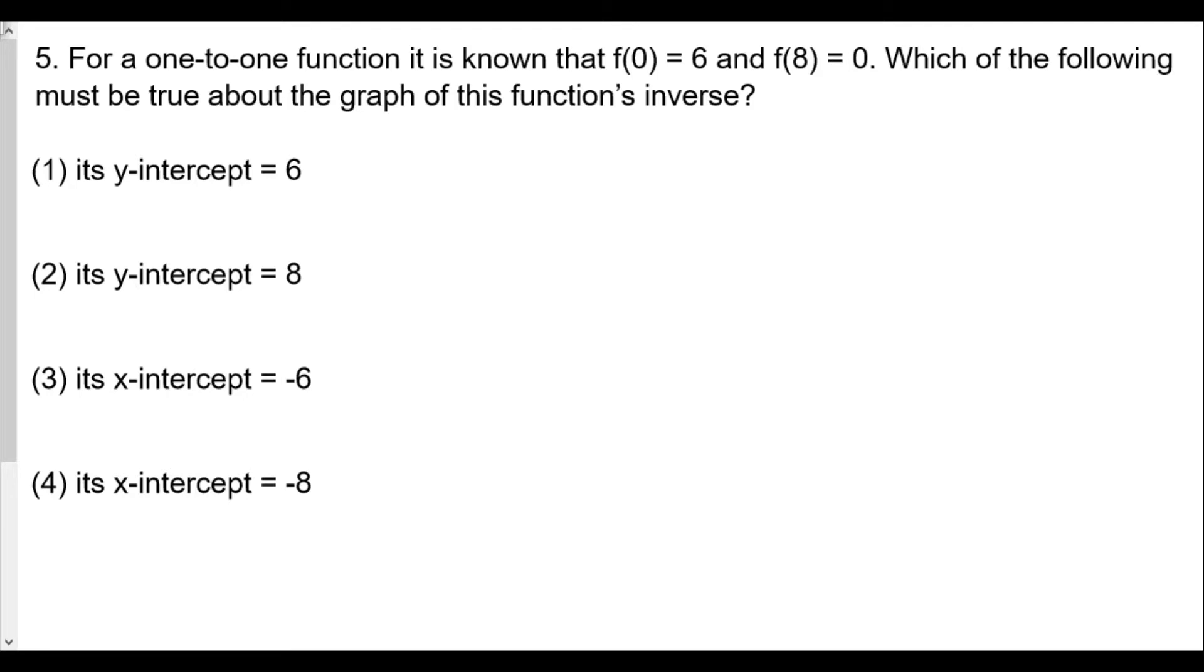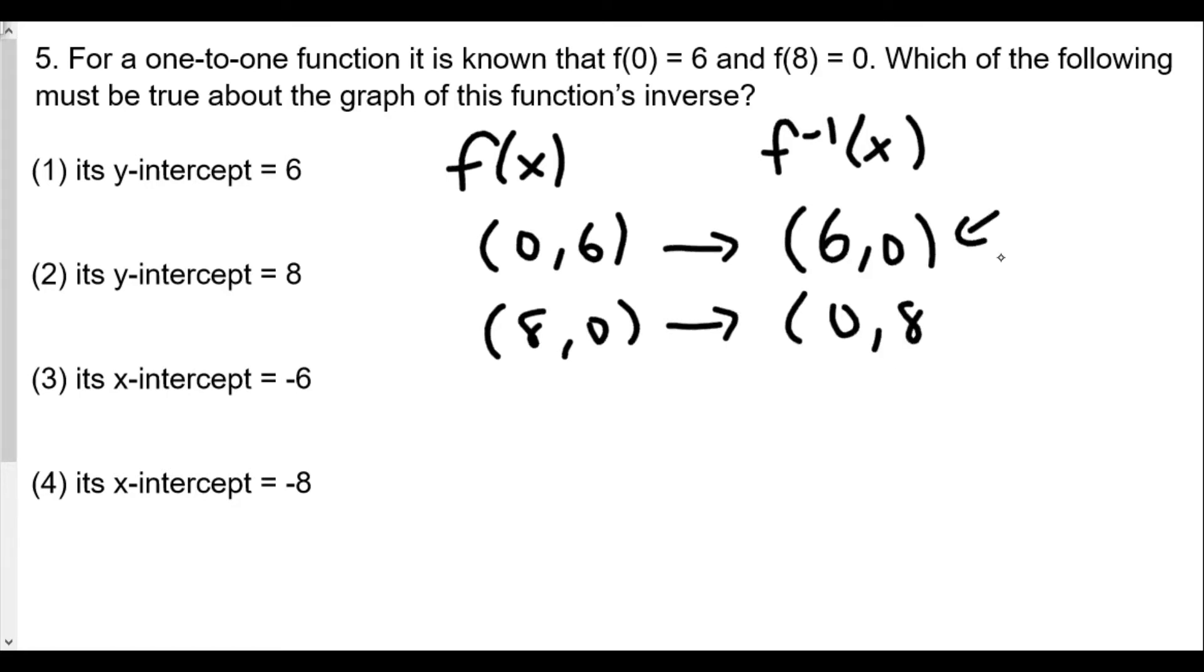Question 5: For a one-to-one function it is known that f(0) = 6 and f(8) = 0, which of the following must be true about the graph of this function's inverse? Well, we know that for f(x) we have two coordinates: (0,6) and (8,0). Therefore its inverse, we know we're going to switch x and y, so the inverse will have (6,0) and then we'll have coordinate (0,8). That means the inverse will have an x-intercept of 6 and the inverse will have a y-intercept of 8. The y-intercept is the value of y when x equals 0, so of 8, not negative 8.